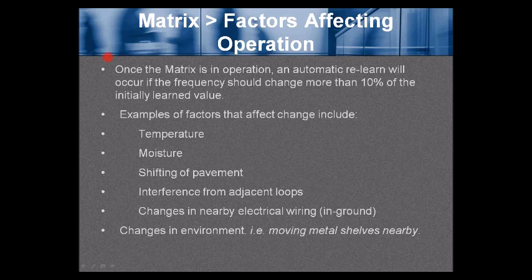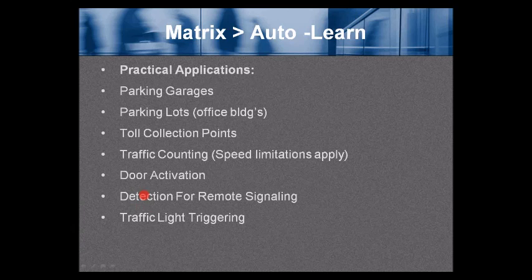Once the Matrix is in operation, an automatic relearn will occur if the frequency changes more than 10% of the initially learned value. Factors that can affect this change include temperature, moisture, shifting of pavement, interference from adjacent loops, changes in nearby electrical wiring in the ground, and environmental changes such as moving metal shelves nearby.